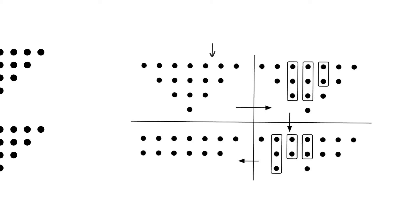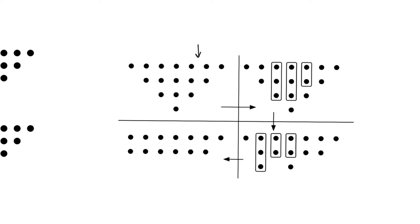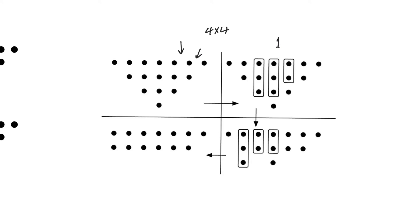The Wallace 3 approach covers as many bits as possible in every step and stops when every bit position has only two bits remaining. This is demonstrated with a 4x4 full multiplier, which has 16 partial products arranged in a triangle. In step one, starting from the LSB: the first bit position has only one bit, so nothing can be done. The second bit position has two bits, but we are not going to cover them with a half adder.